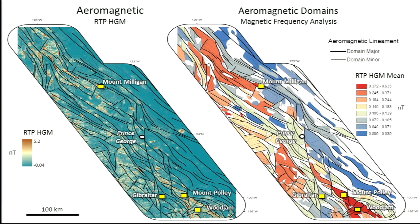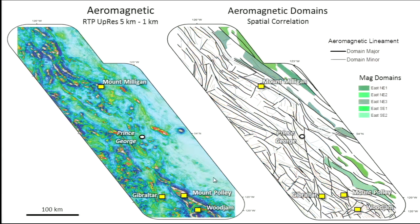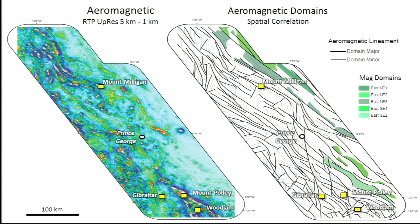Those polygons can be populated by the mean intensity from the RTP, for instance, or the standard deviation of the gravity grid. Here is the case of those domains populated by horizontal gradient magnitude signals. We can already see that the red domain north of — or just west of — Mount Milligan, and the one at Mount Polly and Woodjam, have quite a similarity. And east of that there's a series of low-frequency domains, drastically different to what we see further to the west.